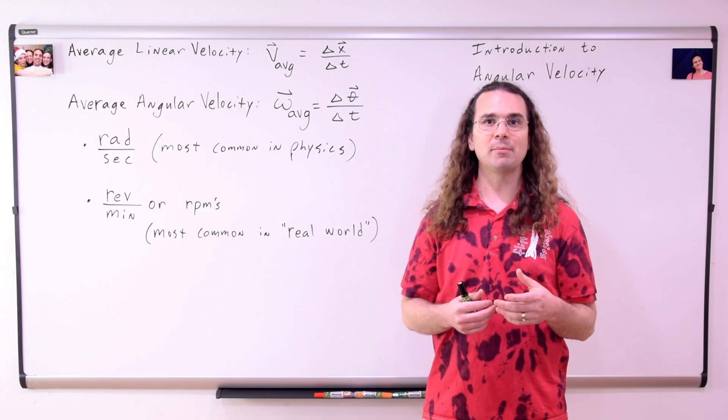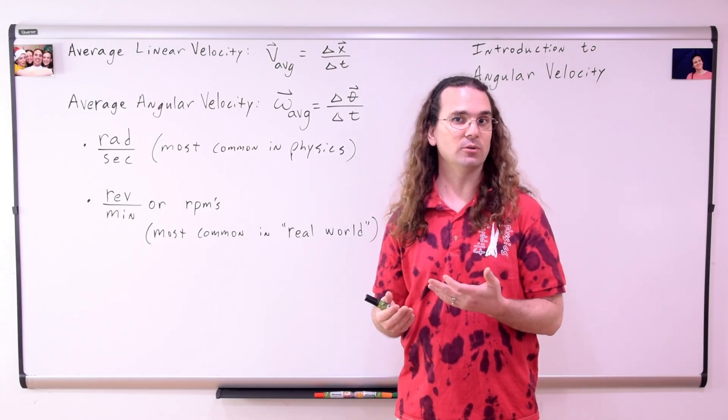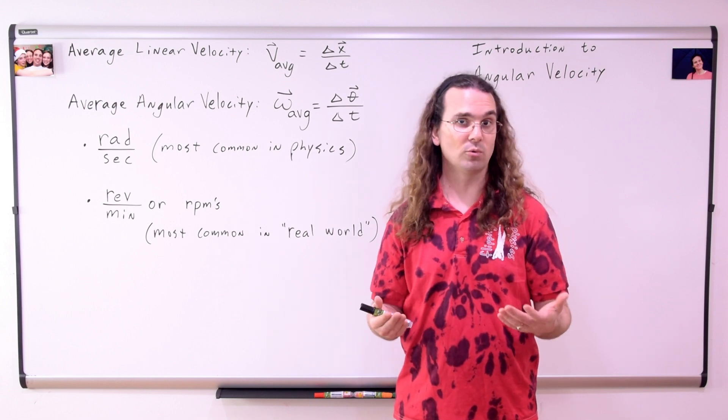Radians per second are what we most commonly use in physics because radians have no units and are a placeholder. Revolutions per minute or RPMs are most commonly used in the real world.